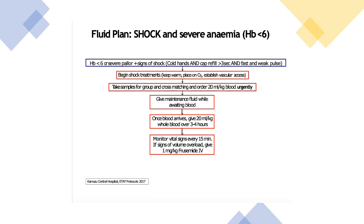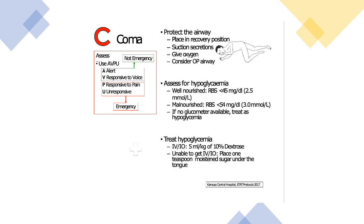After airway, breathing, and circulation, assess for coma using AVPU: is the child Alert, responsive to Voice, responsive to Pain, or Unresponsive? If unresponsive, it is an emergency — protect the airway, place in recovery position, suction secretions, give oxygen, and consider an oral airway. Assess for hypoglycemia with a random blood sugar, or give glucose empirically if unavailable. A blood sugar less than 45 is hypoglycemia in a well-nourished child; less than 54 in a malnourished child. Treat with the rule of 50s: 5 mLs per kg of D10 or 10 mLs per kg of D5. If IV or IO access is unavailable, place one teaspoon of moistened sugar under the child's tongue.